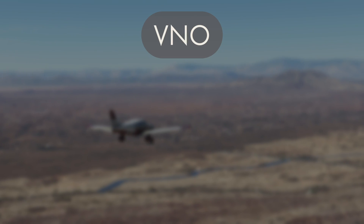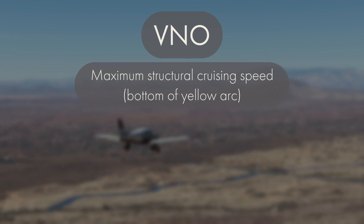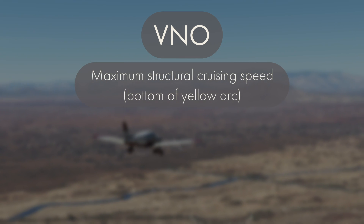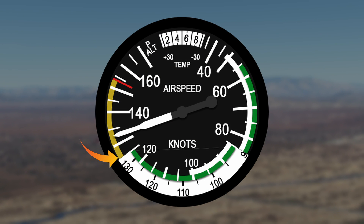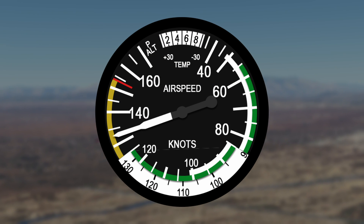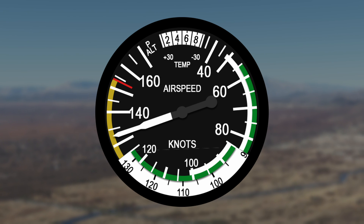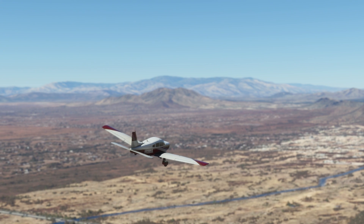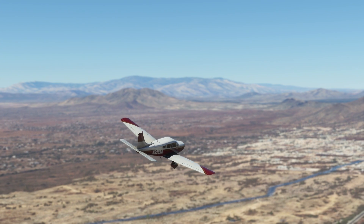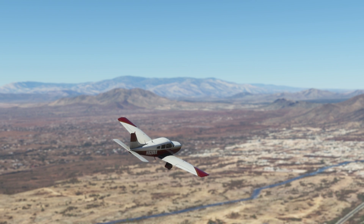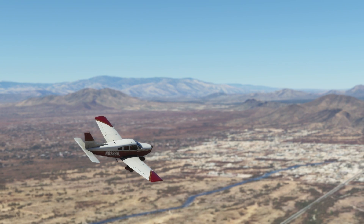Next is VNO. A good way to remember this is 'no go there.' VNO stands for maximum structural cruising speed, and it's portrayed by the bottom of the yellow arc on the airspeed indicator. On the PA-28, this speed is 125 knots. Any airspeed in the yellow arc should only be flown in smooth air — if you encounter turbulence in the yellow arc, it can cause structural damage to the aircraft.